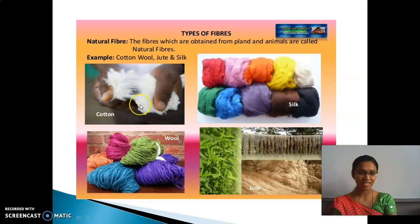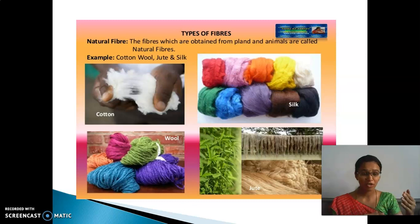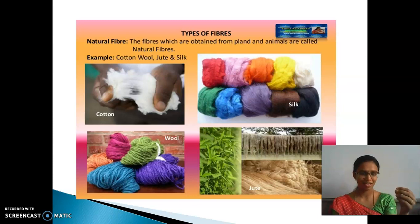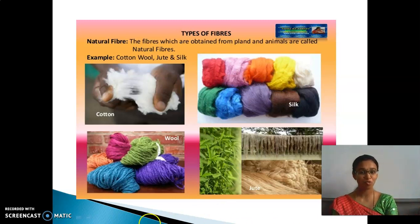We have seen about cotton. The first method is handpicking. And then combing - in that combing they remove the seeds. And for jute, the process involved is retting, and for cotton it is ginning. You would have studied processing of cotton and jute in your sixth standard. Now we are seeing about the animal sources, that is wool and silk.